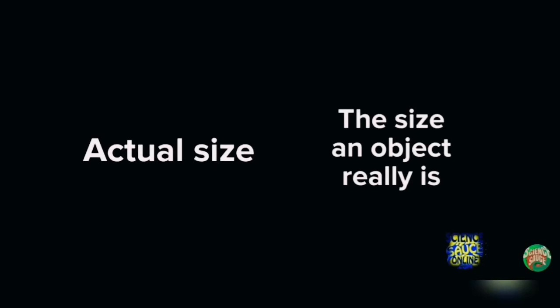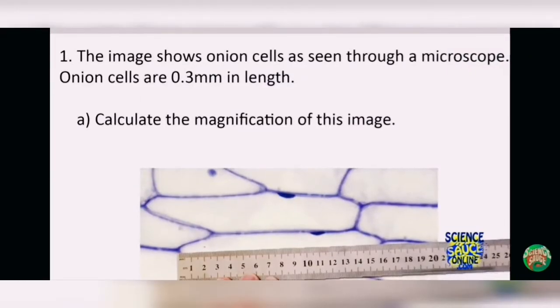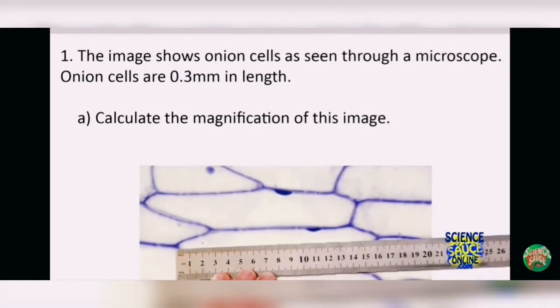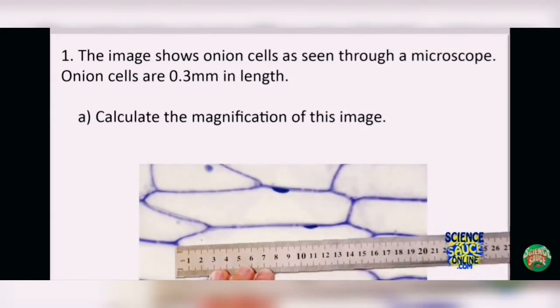So here we are going to see one of the past papers which shows an image of onion cells as seen through a microscope. Onion cells are 0.3 mm in length. Calculate the magnification of this image.